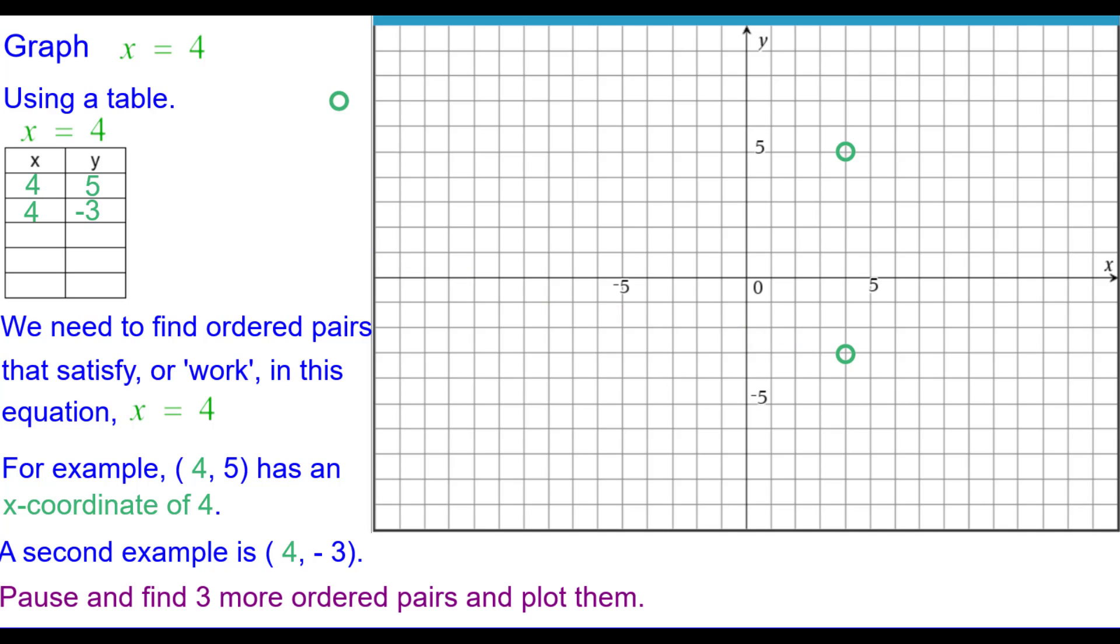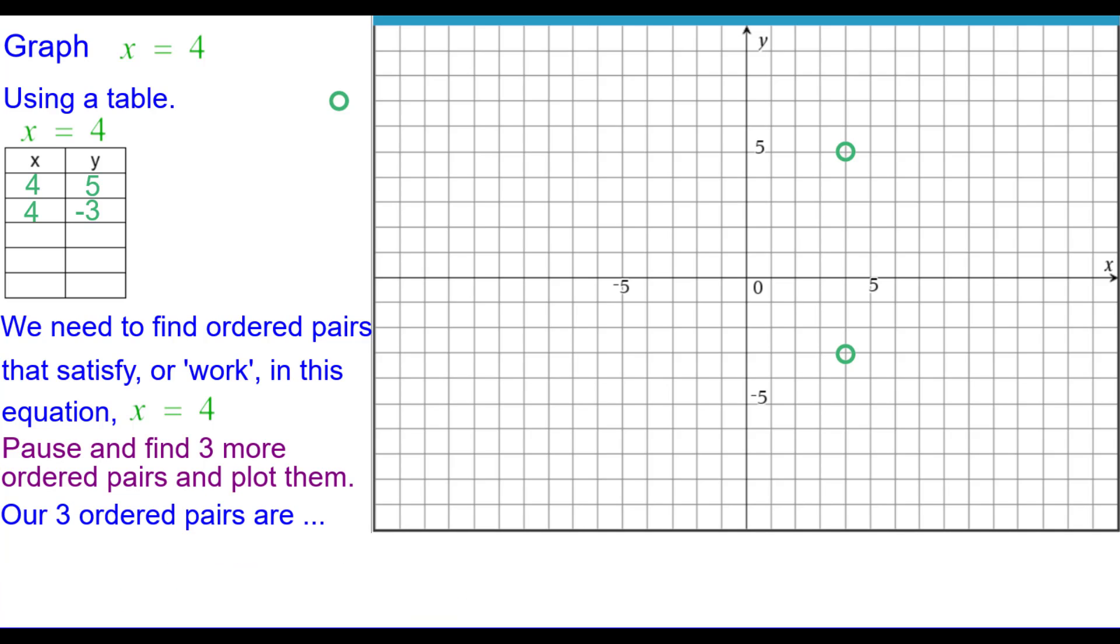Go ahead and pause and find three more ordered pairs and plot those points. Press resume when you're ready. So our three ordered pairs are 4 comma 0, 4 comma 1, and 4 comma negative 6.7, just to show you you do not have to always use integers.